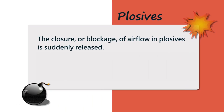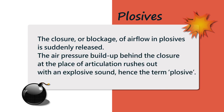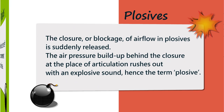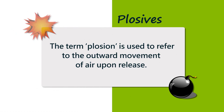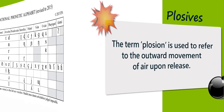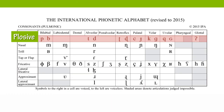Back to plosives: the closure or blockage of airflow is suddenly released, and the air pressure buildup behind the closure rushes out with an explosive sound — hence the term plosive, which is related to explosion. The term refers to the outward movement of air upon release. The plosives of English are 'pa,' 'ba,' 'ta,' 'da,' 'ka,' 'ga,' and the glottal stop. Other plosives in the chart exist in other languages but not in English.